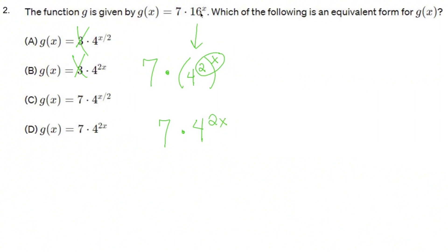So g(x) can be written as 7 · 4^(2x), so D is my answer. Hope this helps, thanks, like and subscribe.